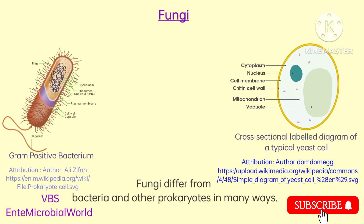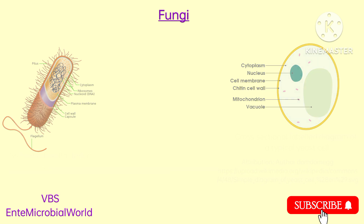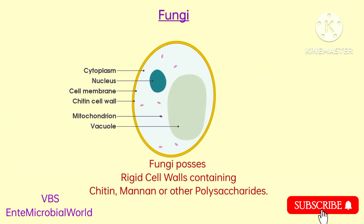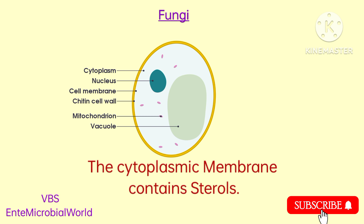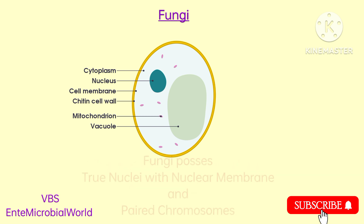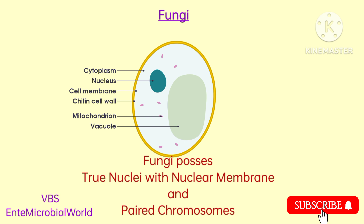Fungi differ from bacteria and other prokaryotes in many ways. Fungi possess rigid cell walls containing chitin, mannan or other polysaccharides. The cytoplasmic membrane contains steroids. Fungi possess true nuclei with nuclear membrane and paired chromosomes.